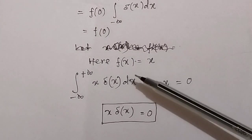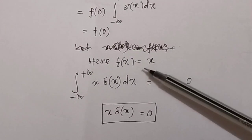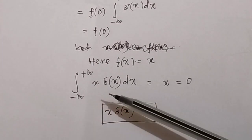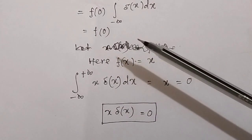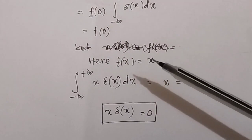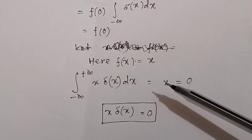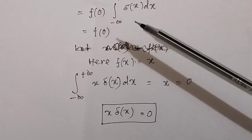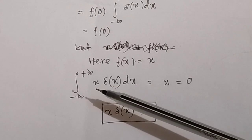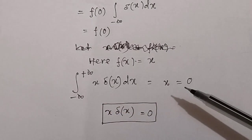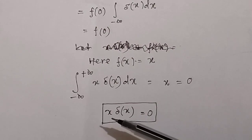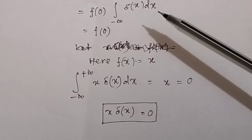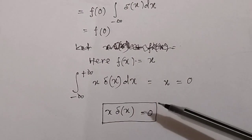Here the function f(x) is equal to x. If you take f(x) = x, then the integration from minus infinity to plus infinity of x·δ(x) dx will be equal to f(0), where the function is x. The Dirac delta function is defined only when x = 0, and since the function is x, the value of x at that point is 0. So x·δ(x) equals 0 multiplied by δ(x), which is also equal to 0, even though the delta function has value 1 — when multiplied by 0, the result is 0.